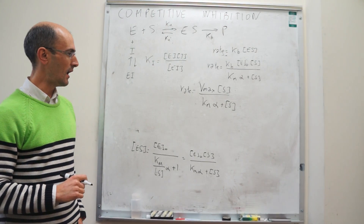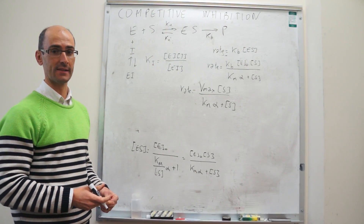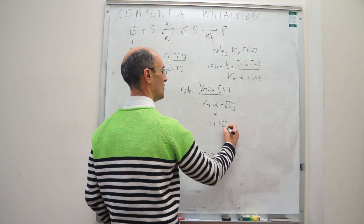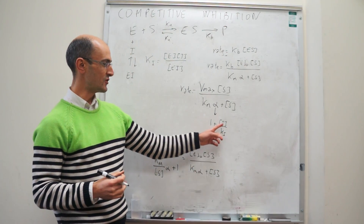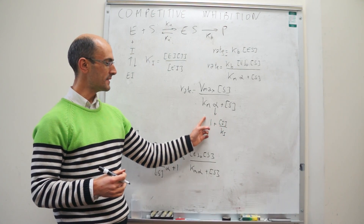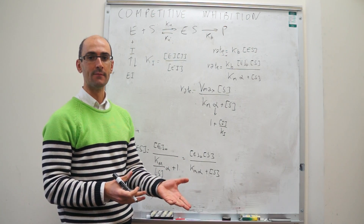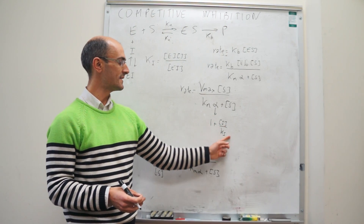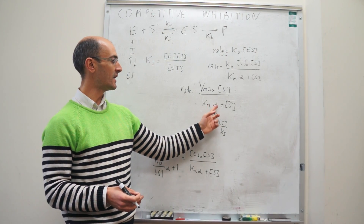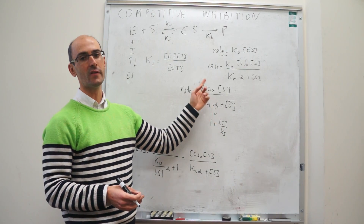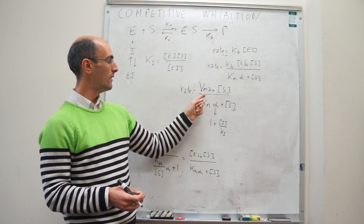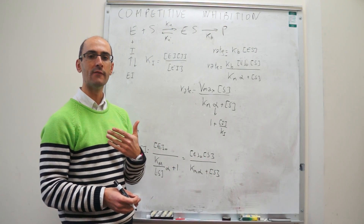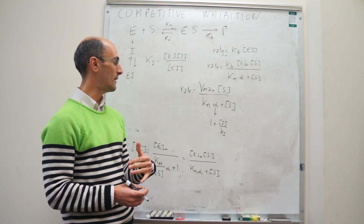This is not very different from the uninhibited Michaelis-Menten rate law — the only difference is alpha in the denominator, where α = 1 + [I]/K_I. If there's no inhibitor ([I] = 0), alpha equals 1 and you recover exactly the standard rate law. But as soon as [I] > 0, alpha becomes greater than 1, making the denominator larger, so the rate is lower. Adding a competitive inhibitor decelerates the reaction.